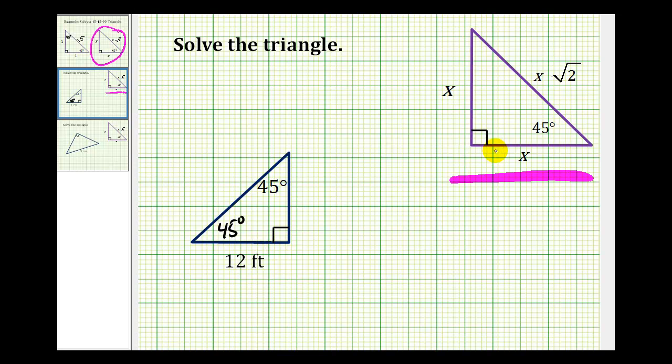Both of the legs of a 45-45-90 triangle would be equal to x, and that's all we need to determine the length of the other two sides. The other leg would also be equal to x, or 12 feet, and the hypotenuse would have a length of x times square root two, so in this case, it'd be 12 times square root two, or 12 square root two feet. And this triangle is now solved.